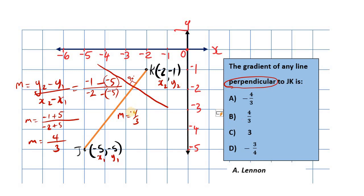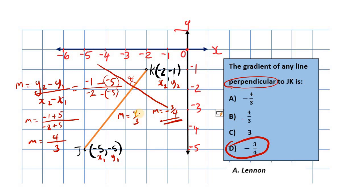Since this gradient is positive, the perpendicular gradient must be negative. A reciprocal means we flip the fraction — numerator becomes denominator and denominator becomes numerator. So 3 goes on top and 4 goes below, and since one is positive, the other is negative. A line sloping downwards from left to right always has a negative gradient. So the gradient of the perpendicular line is negative 3 over 4 — that's the correct option. Any line perpendicular to JK will have a gradient of negative 3 fourths.